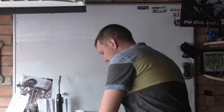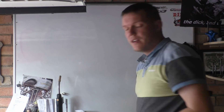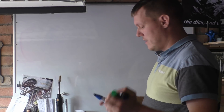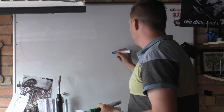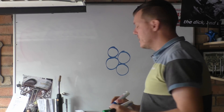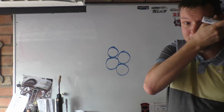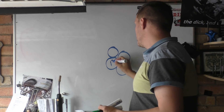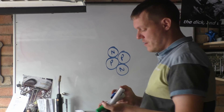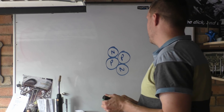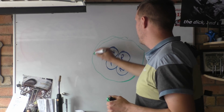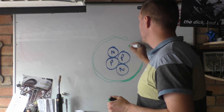So the guy says to me: atoms don't touch. You have the core of an atom, the nucleus — these are protons and neutrons — and then around here, in a fuzzy mess, you have your electron shells.